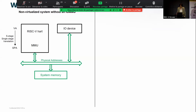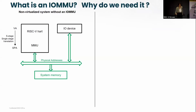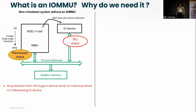By using the page table, we can perform permission checks and we protect the memory. When the device driver is programming the DMA-capable IO device, the DMA is programmed with a physical address, and of course in this data flow, there is no check performed on the path to memory. So there is no protection from a malicious device driver or from a misbehaving IO device.